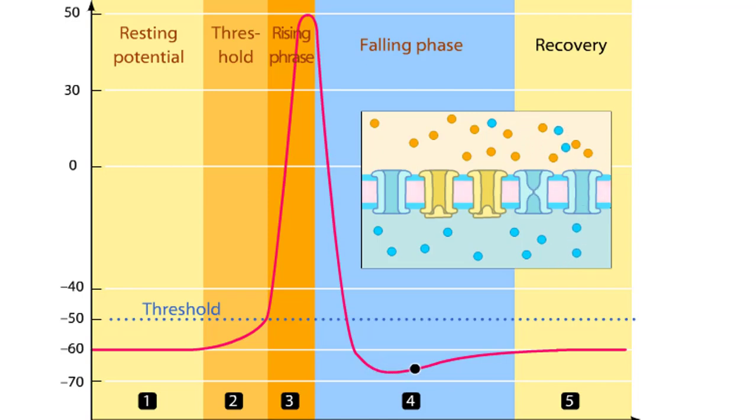The return to steady state continues as the additional potassium channels that open during the action potential now close. The membrane potential is now determined by the subset of potassium channels that are normally open during the membrane's resting state.